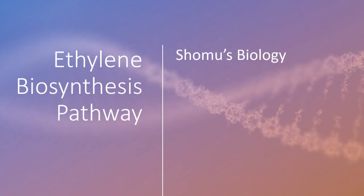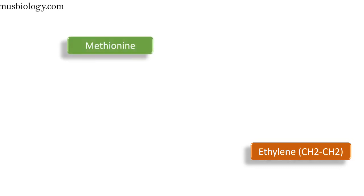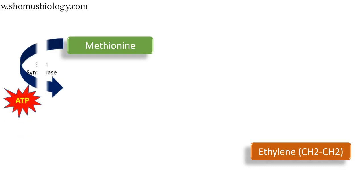Now let's talk about the ethylene biosynthesis pathway. Ethylene is a gaseous hormone that is quite readily produced by plants. Like every biosynthesis pathway, ethylene biosynthesis needs a precursor. The precursor for ethylene is methionine — we start with the amino acid methionine.